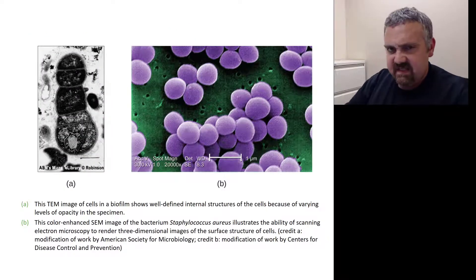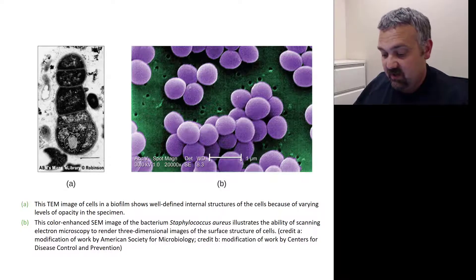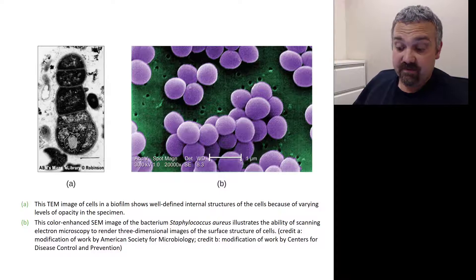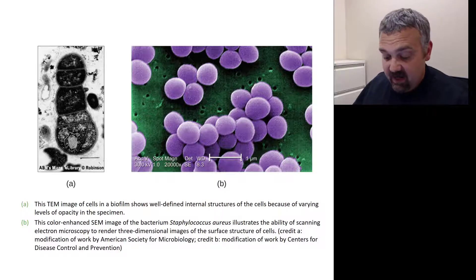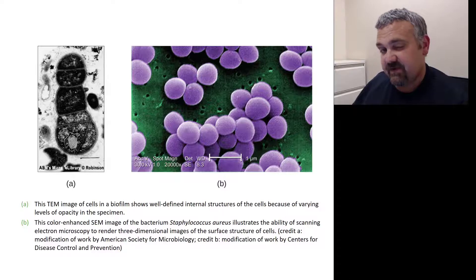The images from the two microscopes are quite different because of those differences. On the left-hand side, we see a transmission electron micrograph, or TEM — if you see TEM in a textbook or online, it's the transmission electron micrograph. It can see structures that are much smaller and can see internal structures. On the right-hand side, we have a colorized scanning electron micrograph, which can't achieve the same magnification, but can see the surface structures of a microorganism in three dimensions.